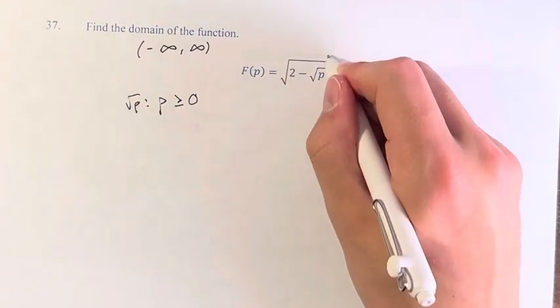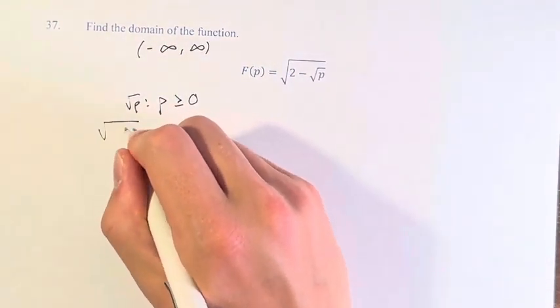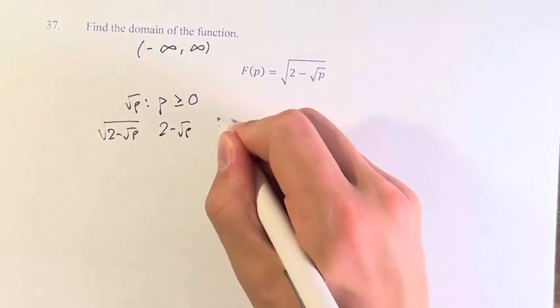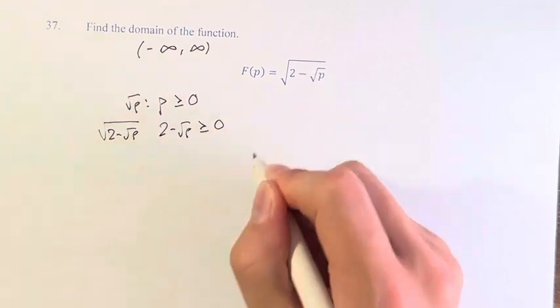Next, we have this greater square root, the square root of 2 minus the square root of p, which means what's inside, 2 minus the square root of p, has to also be greater than or equal to 0.